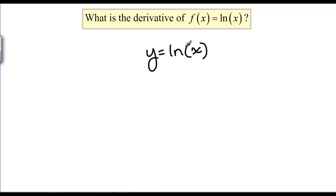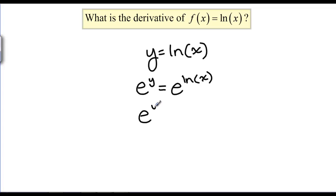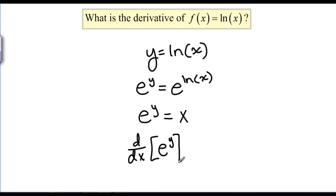but we do know how to undo natural log of X. If you do E of both sides, E to the Y equals E to the natural log of X, then we know that E and LN undo each other, so we get E to the Y is just X. Now E to the something is something we know how to take the derivative of, and of course we know how to take the derivative of X, so we're going to take the derivative of both sides of this equation in terms of X.